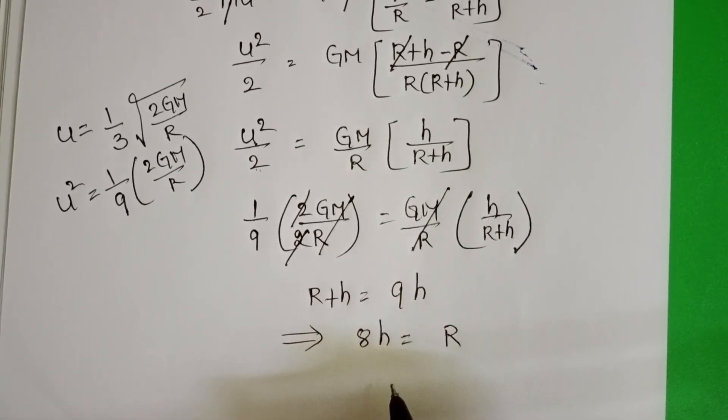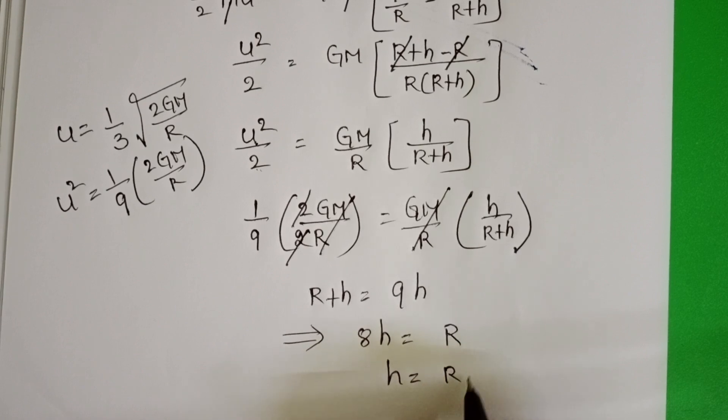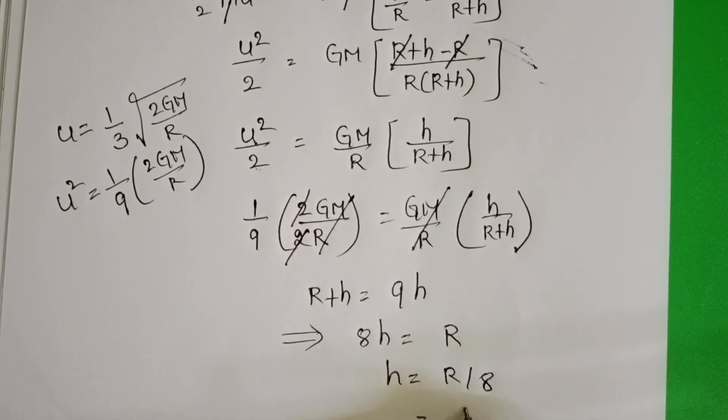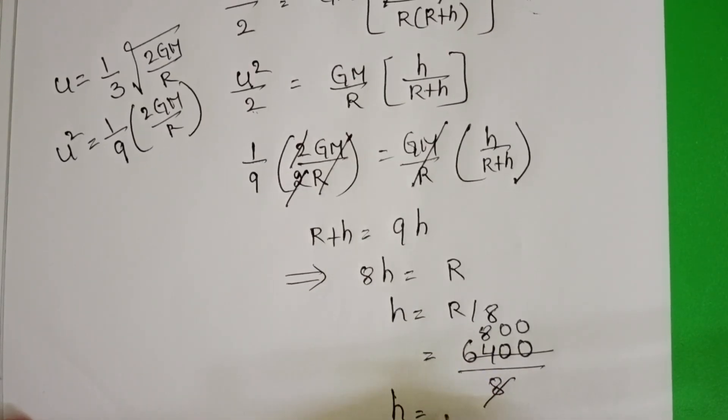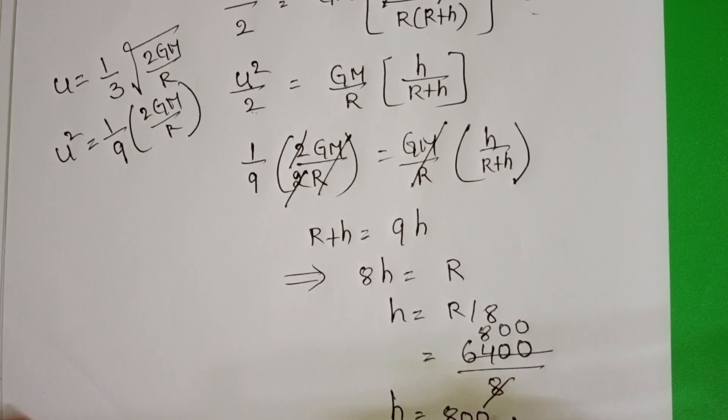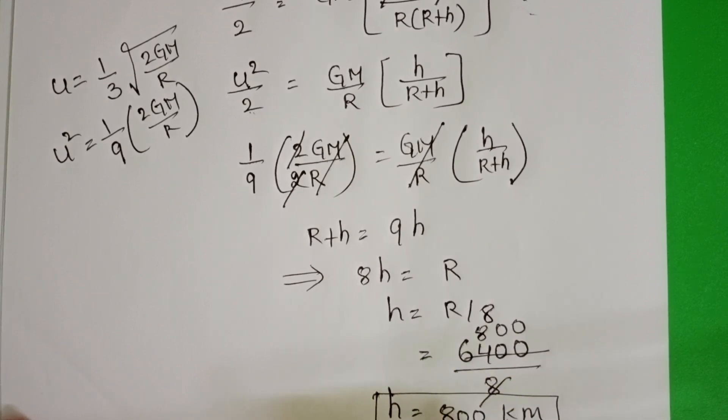8h equals R. h equals R by 8. We know radius of the earth 6,400 km. So maximum height reached by the upward projecting body is 800 km.